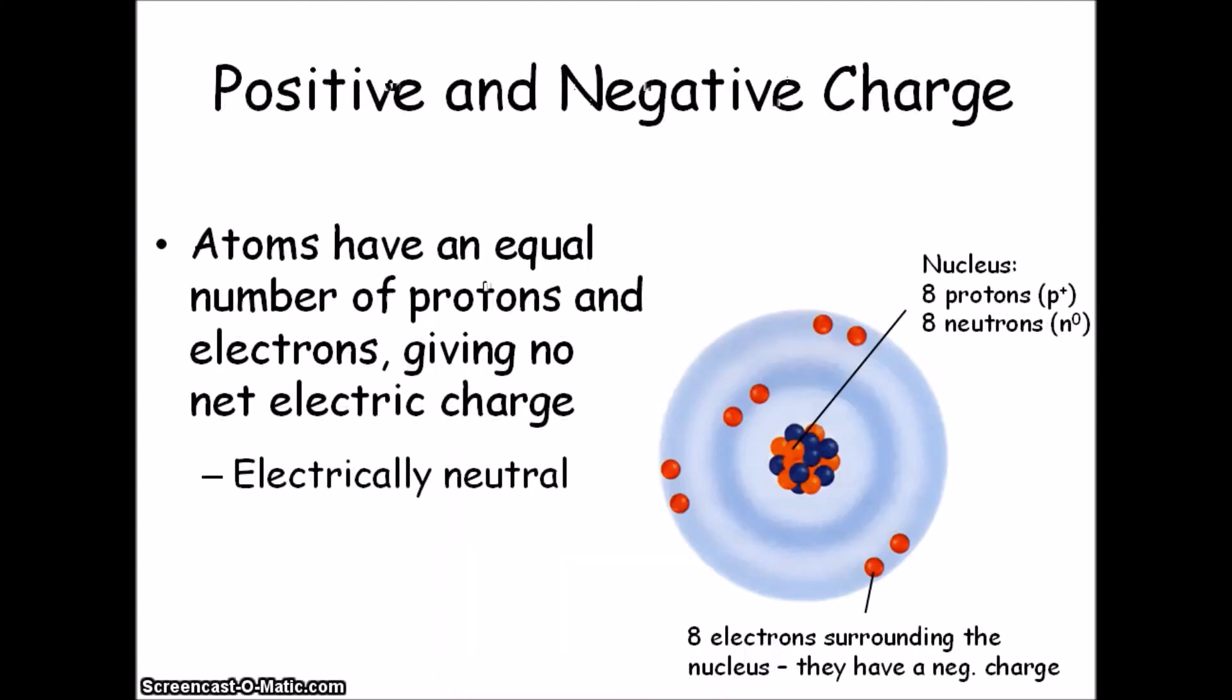Okay, so our positive and negative charges in our atoms normally have an equal number of protons and electrons, and that gives us no net charge. So no overall charge, giving us a neutral atom.